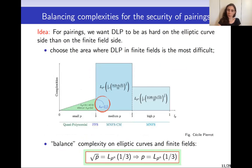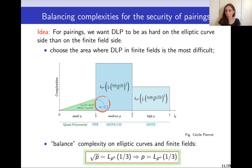Going back to the first motivation — the security of pairings — we want DLP to be as hard on the elliptic curve side as on the finite field side. We can ignore the small characteristic area because of known quasi-polynomial algorithms with much better complexities. This leaves us with an L(Pn) of one-third complexity for all known algorithms in medium and high characteristic. Balancing this with the elliptic curve side, which has square root of p from Pollard rho, we end up with a characteristic p of the form L(Pn) of one-third — corresponding exactly to this boundary case.